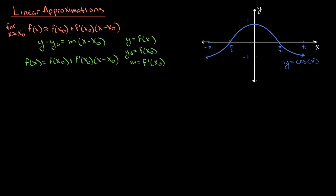We use this tangent line as a linear approximation to estimate values of our function. It's only going to be accurate for x values near where we based our tangent line. And why would we want to use a linear approximation? There are some pretty tricky functions out there, and if we can work with a line instead, that's nicer.